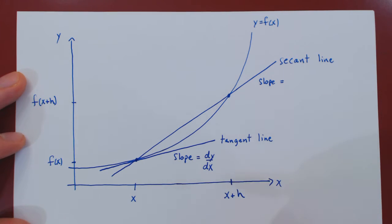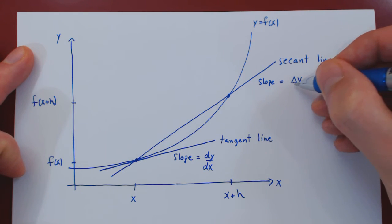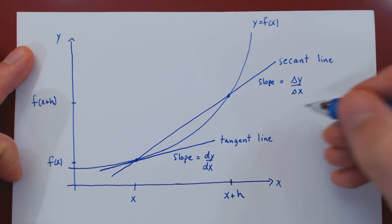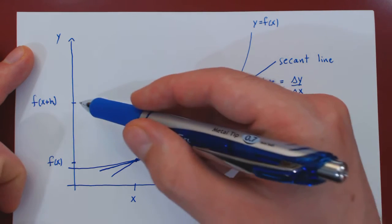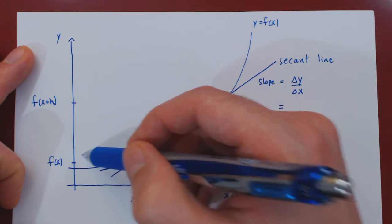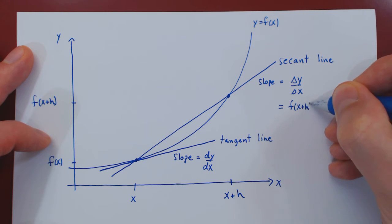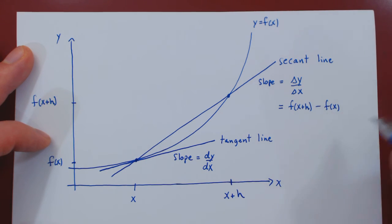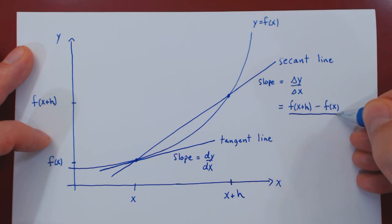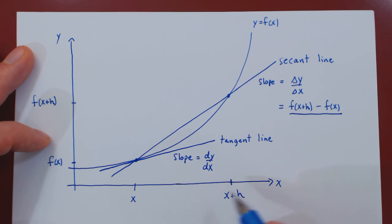Now we have two distinct points on the line, so we can easily find its slope. The slope of a line is the change in y over the change in x. The change in y is the second point minus the first: f of x plus h minus f of x. So delta y equals f of x plus h minus f of x. And we divide by the change in x, which is the larger x value minus the smaller: x plus h minus x. The x cancels, and we're left with h.